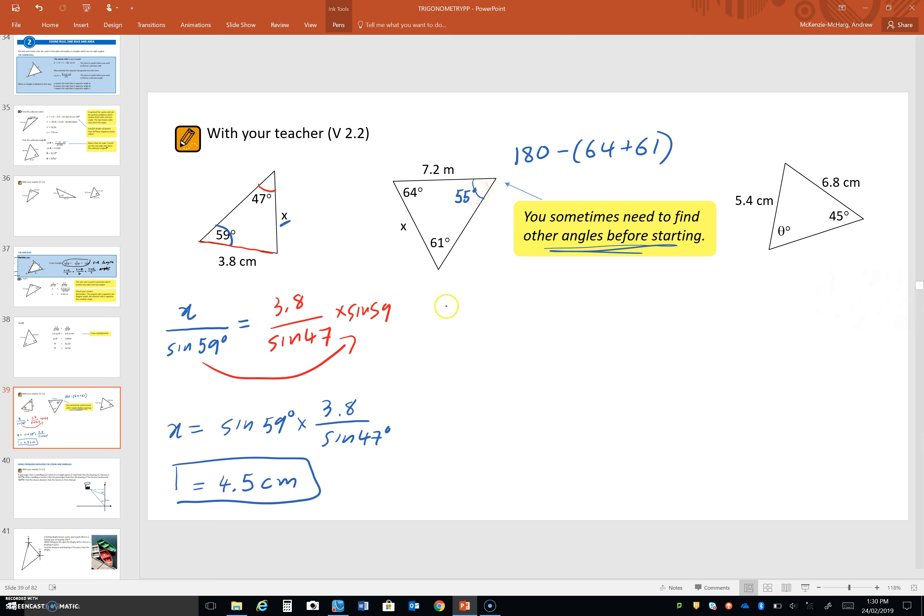Which gives us 55 degrees here. So, what we would have in this case, is this: that's the size 7.2 over the sine of 61. So, a very similar style of rearranging.